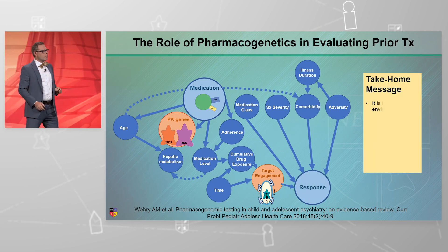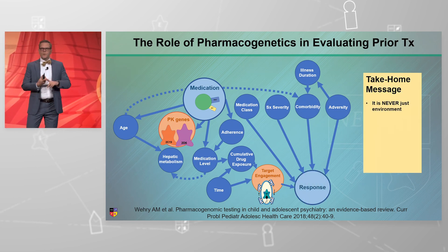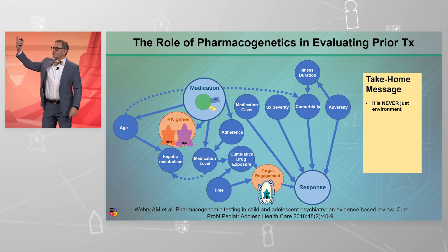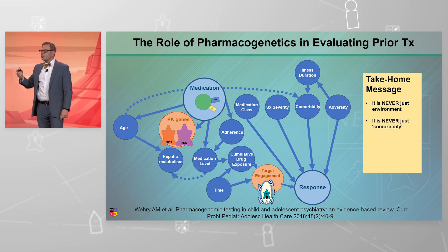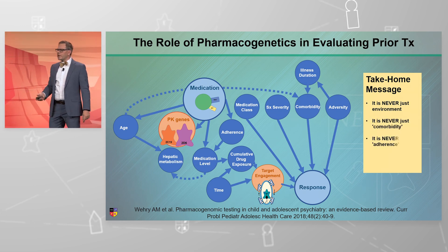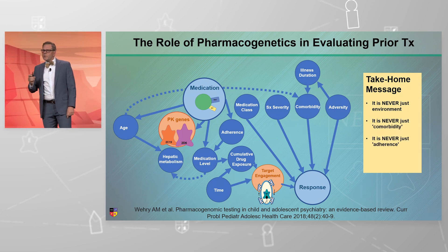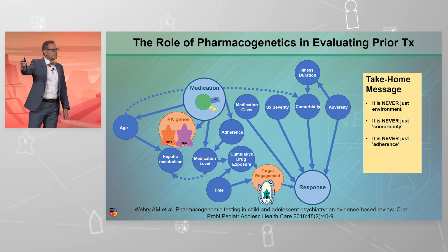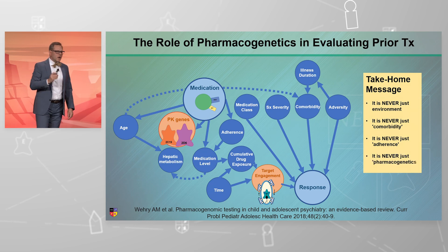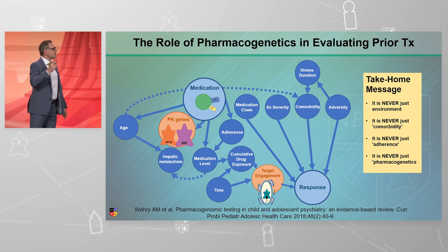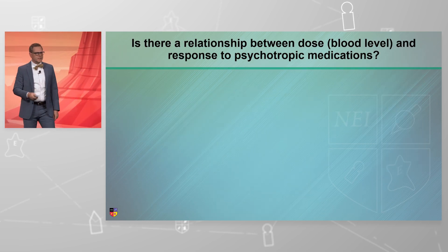So what's the take-home message here? Number one, it is not just environment. Number two, it is not just comorbidity. Number three, it is not just adherence. Number four, it is not just pharmacogenetics.